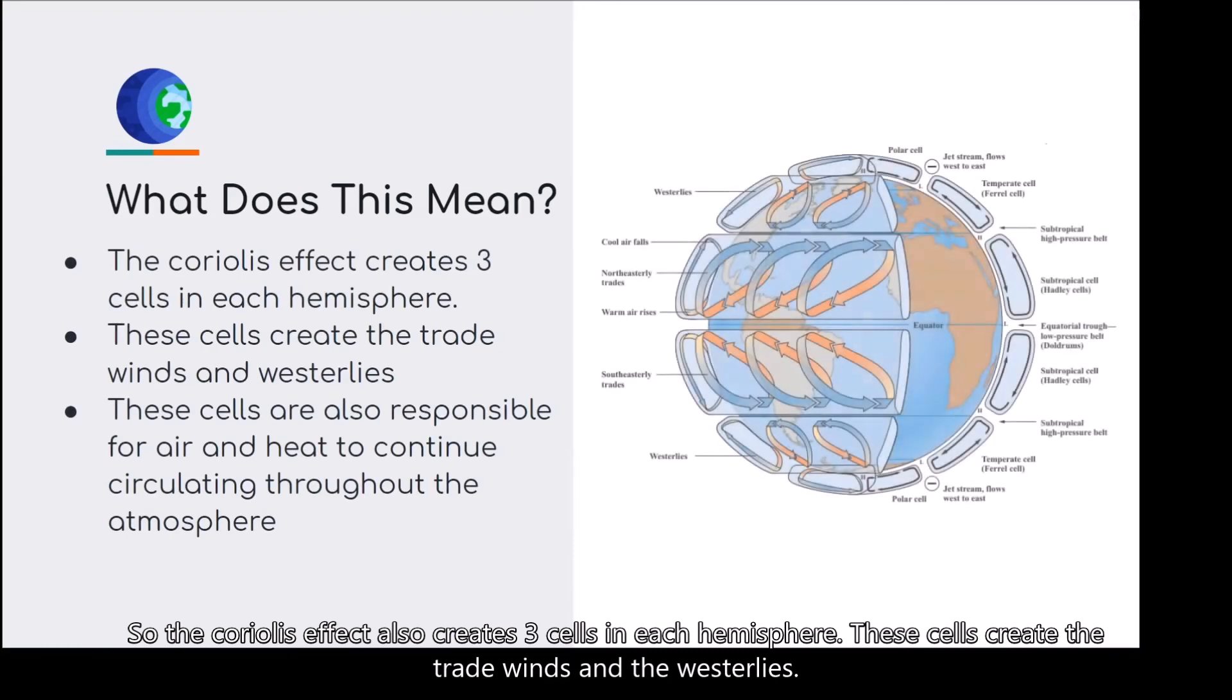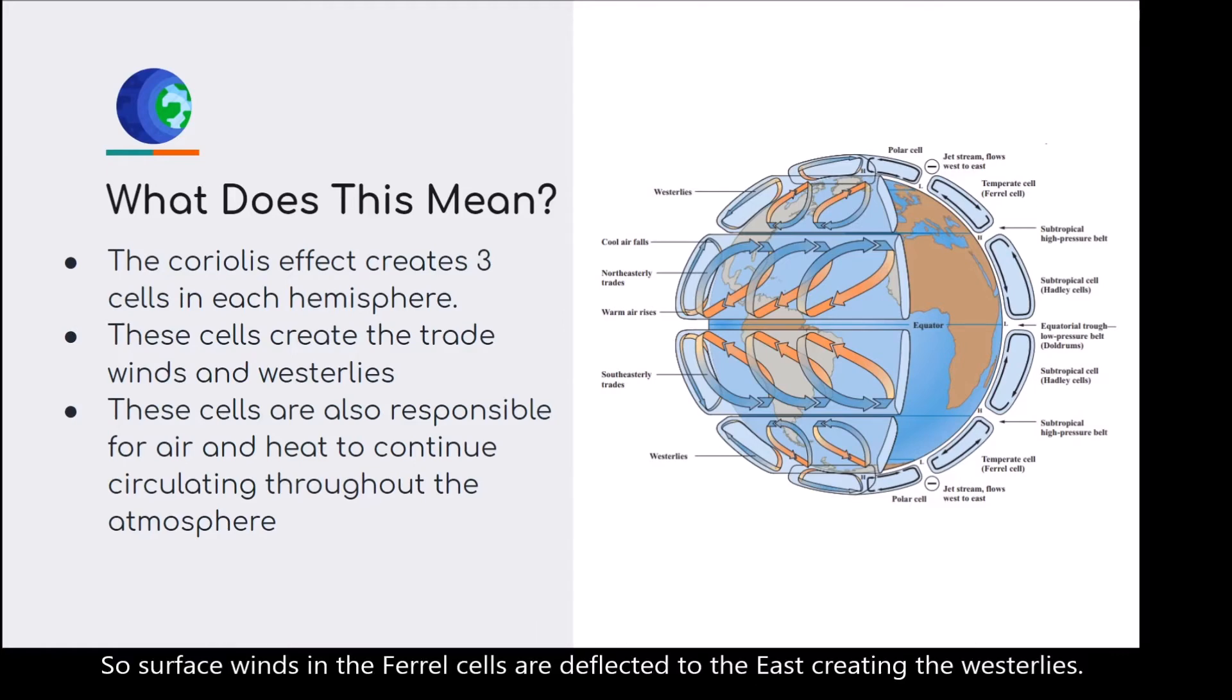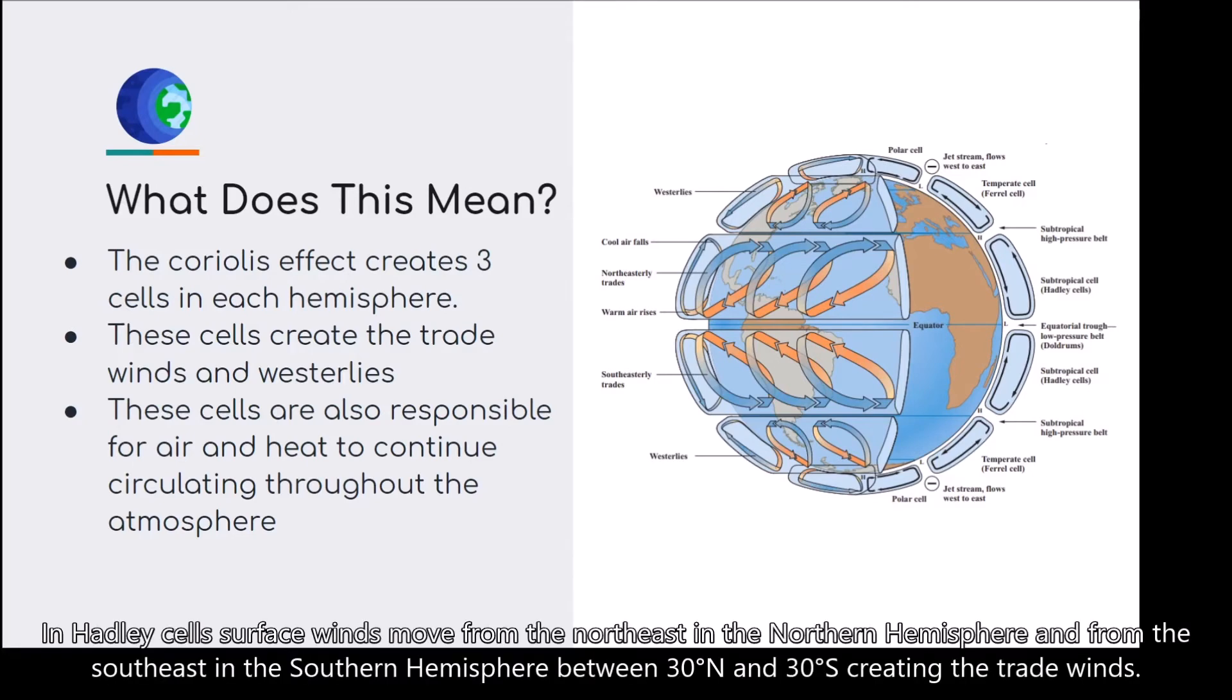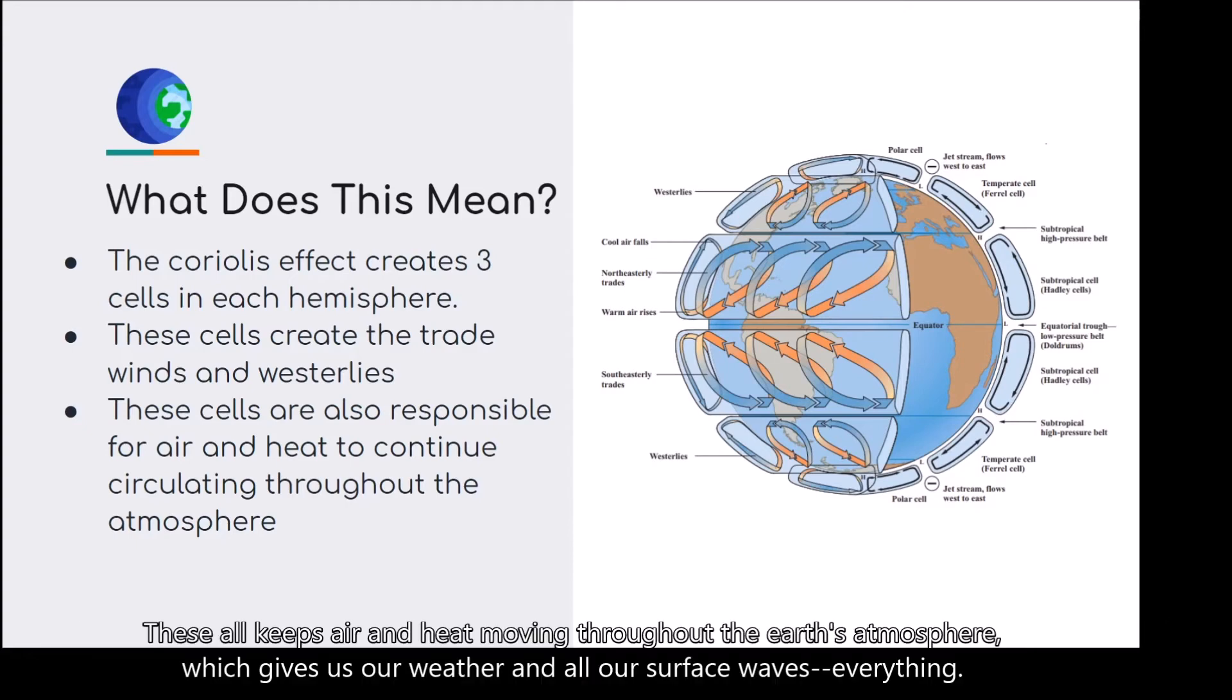The Coriolis effect also creates three cells in each hemisphere. These cells create the trade winds and the westerlies. Surface winds in the feral cells are deflected to the east, creating the westerlies. In Hadley cells, surface winds move from the northeast in the northern hemisphere and from the southeast in the southern hemisphere, between 30 degrees north and 30 degrees south, creating the trade winds. This all keeps air and heat moving throughout the Earth's atmosphere, which gives us our weather and all our surface waves and everything.